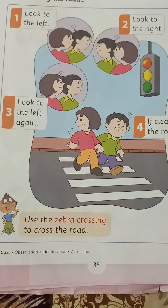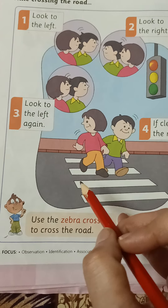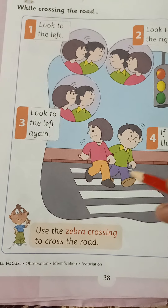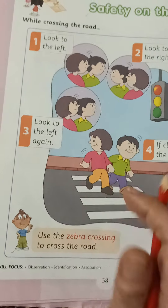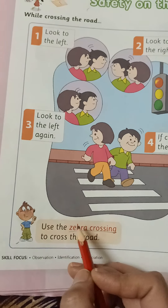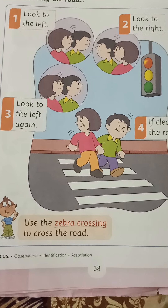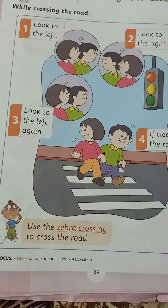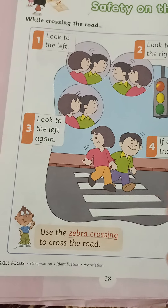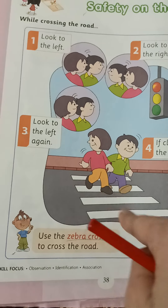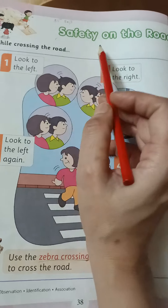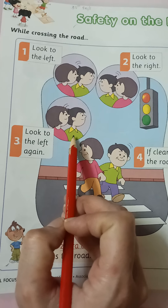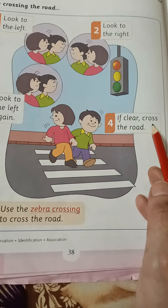You should always use the zebra crossing to cross the road. When you go to the road, you will see black and white stripes on it. That path is called the zebra crossing. Just like a zebra has white and black stripes on it, in the same way, there are black and white stripes on the road — that is why it is called the zebra crossing. To cross, first look left, then look right, then look left again, and if clear, cross the road.